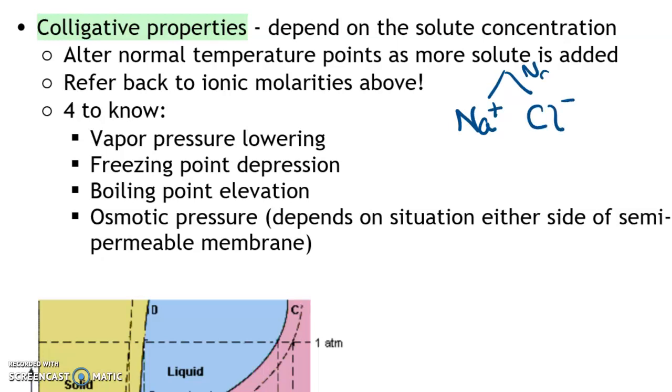So even though the solute is NaCl, the number of particles in the solution is going to be twice that concentration because you have two types of ions that are being formed. So this is kind of similar to where I was talking about molarity in the previous video.